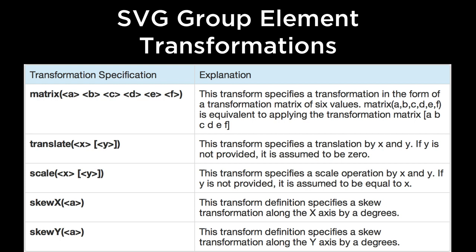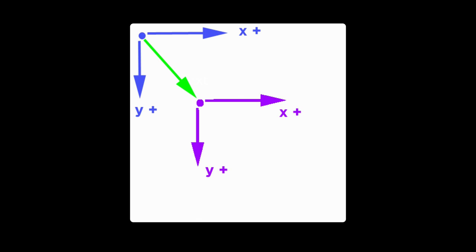Being able to skew the elements along the x-axis, skew the elements along the y-axis, scale up or scale down the size of elements, rotate the elements, or do a combination of some or all of these things. You can even nest transformations inside of other transformations.